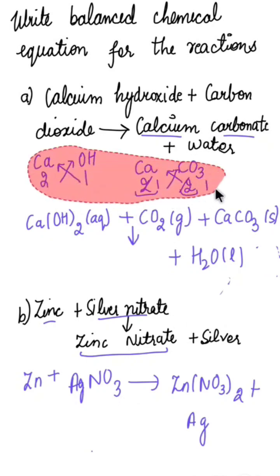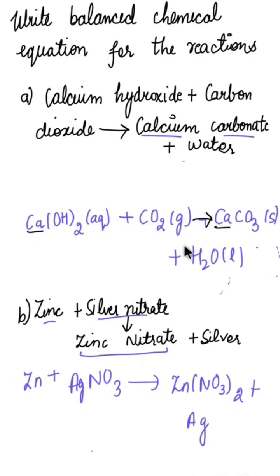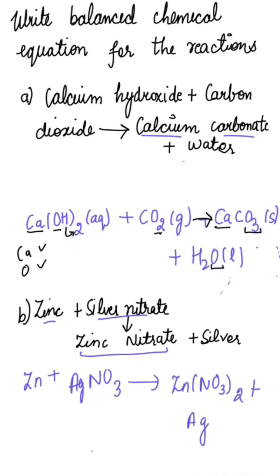Now let's balance the equations. For equation one: Ca(OH)₂ + CO₂ → CaCO₃ + H₂O. One atom of calcium is on the reactant side and one on the product side — balanced. OH₂ gives two oxygen and two hydrogen atoms. On the product side, CO₃ gives three oxygen and the water gives one, totalling four — balanced.